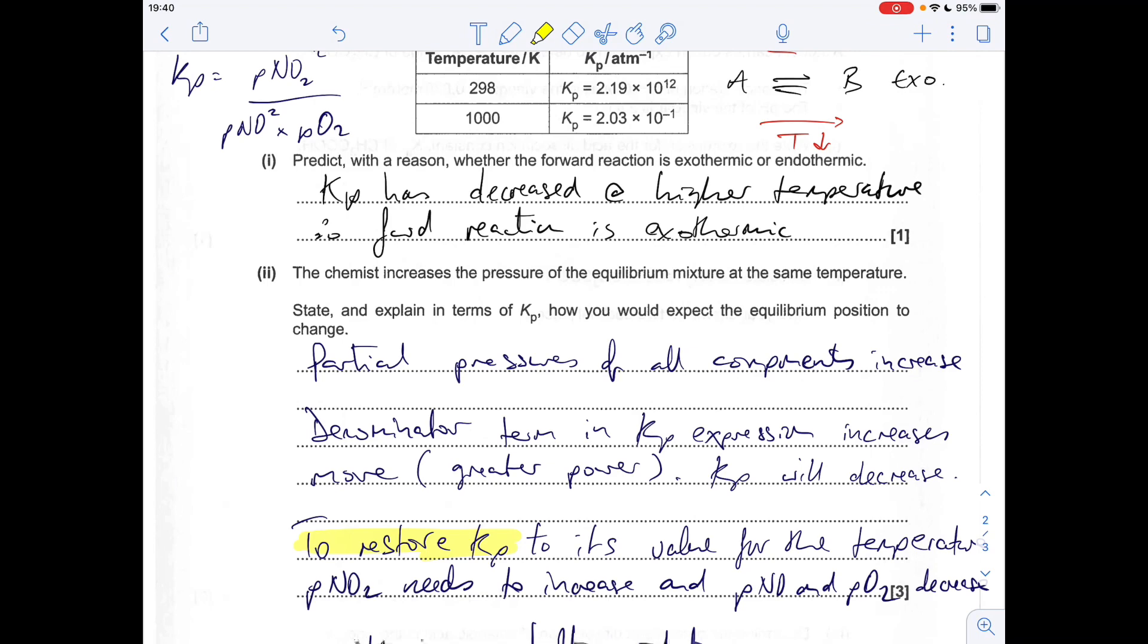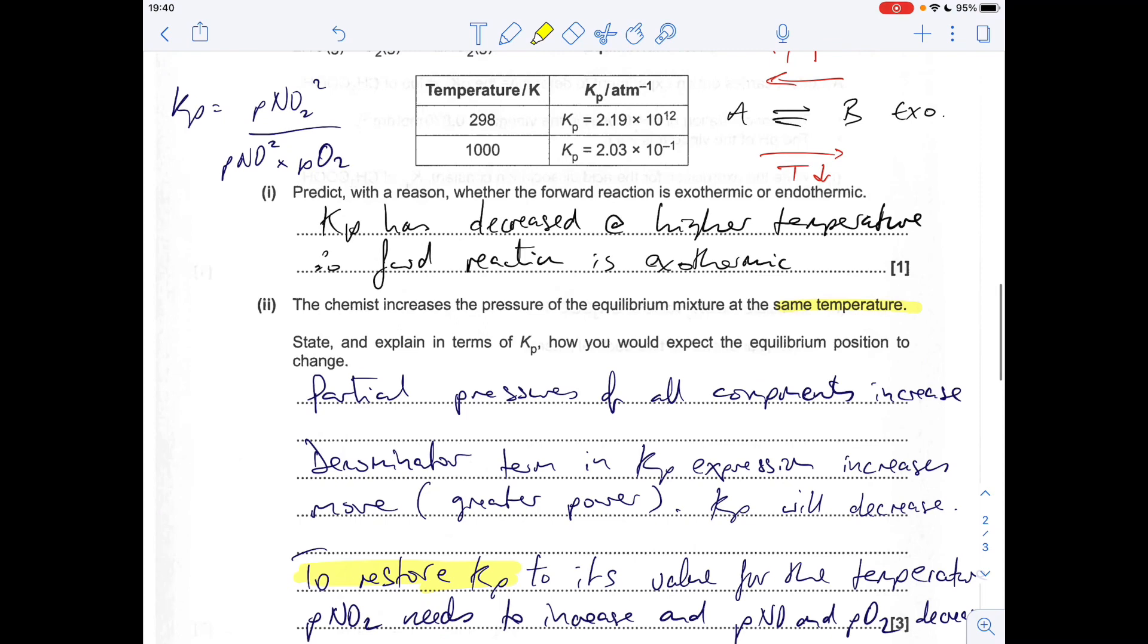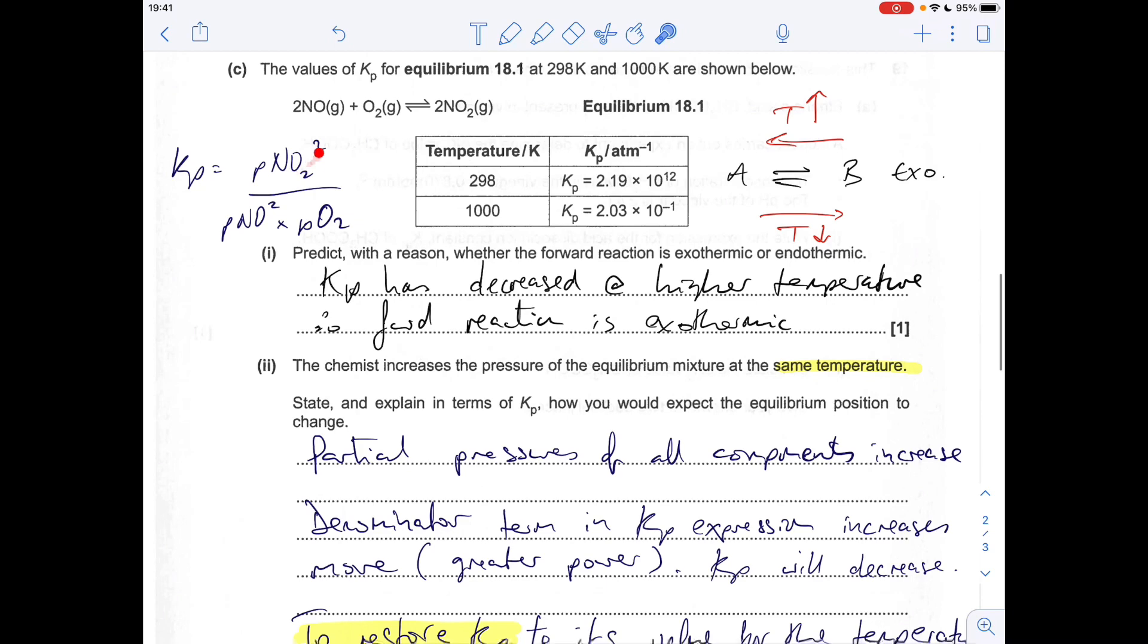We're making it clear that we know Kp has to stay the same because the temperature is the same. So to restore Kp to its value for that temperature, the partial pressure of NO₂ needs to go up and these need to come down.